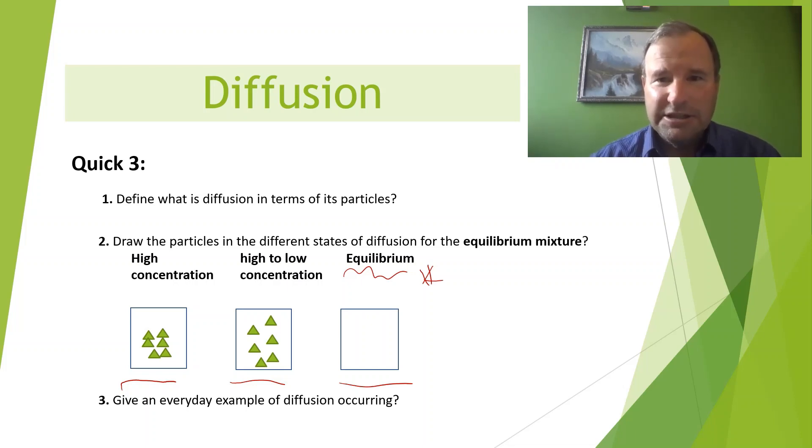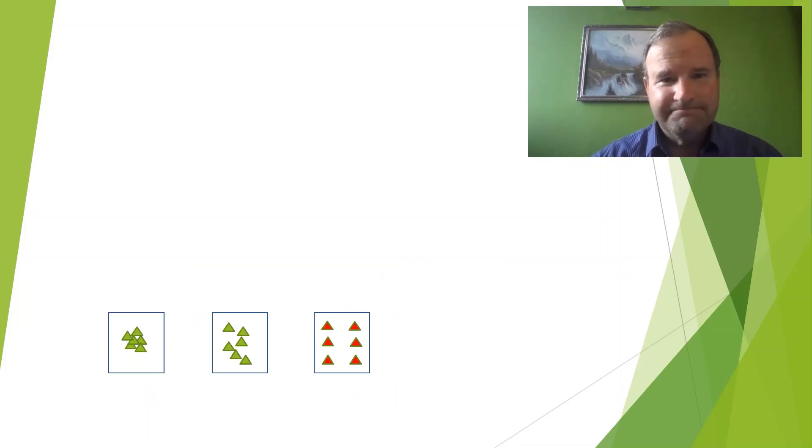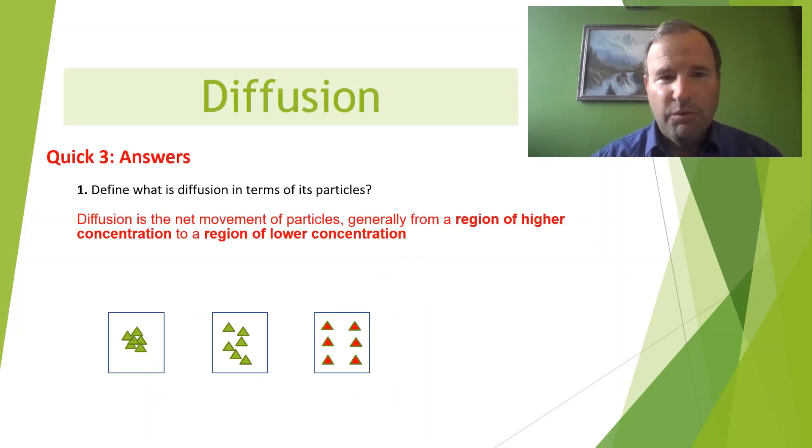Here are the answers in detail. Suggested answers, that is. Let's see how we go. Okay, number one. What is diffusion in terms of particles? This is a suggested answer. Diffusion is the net movement of particles generally from a region of higher concentration to a region of lower concentration. So that could be a suggested answer or something similar. Well done if you got that correct.